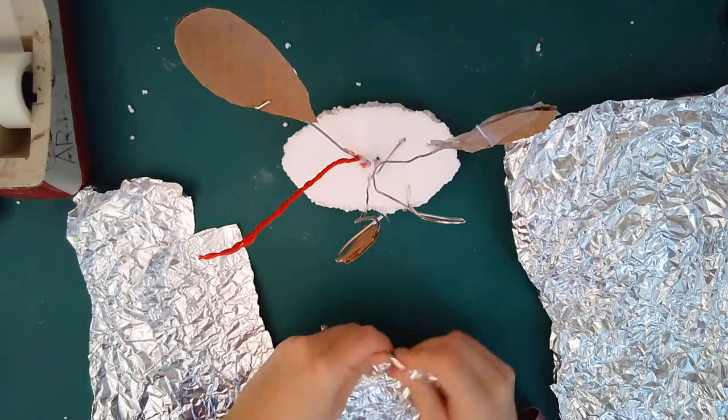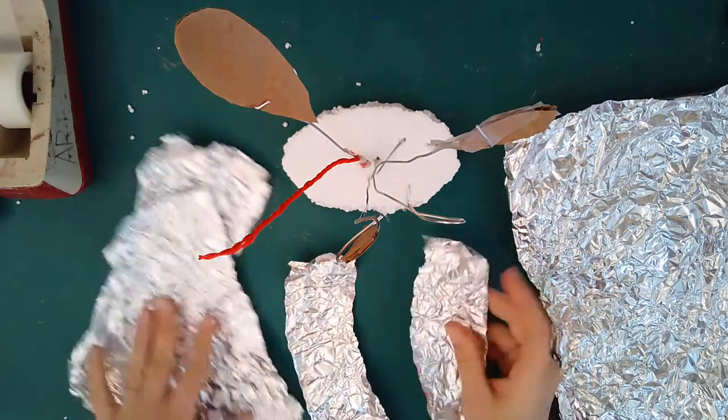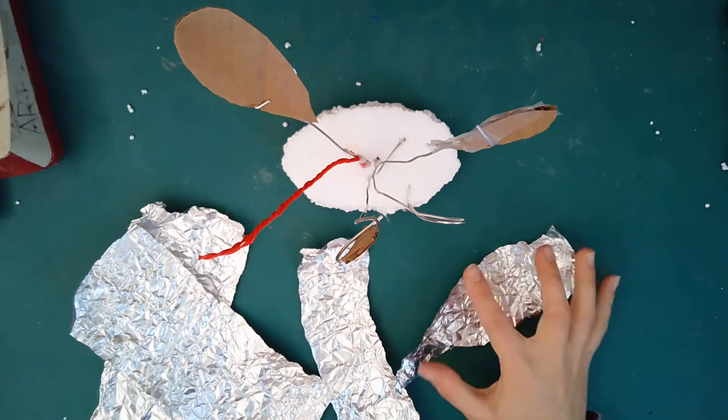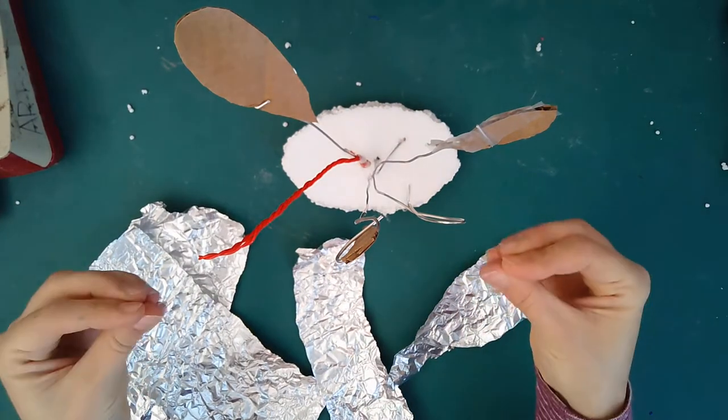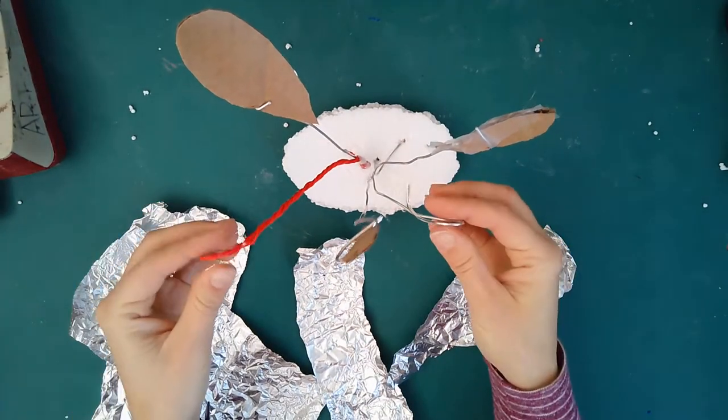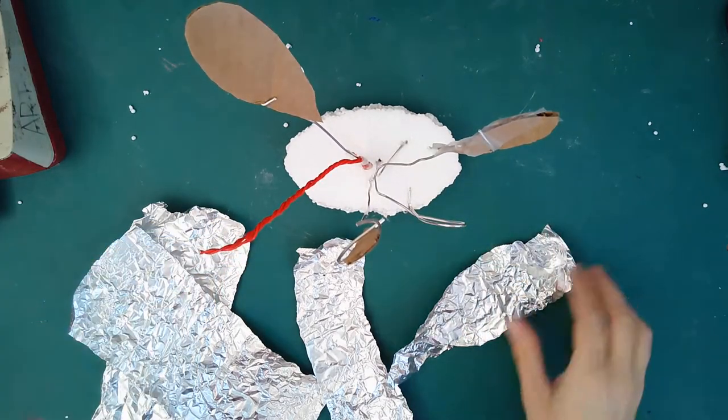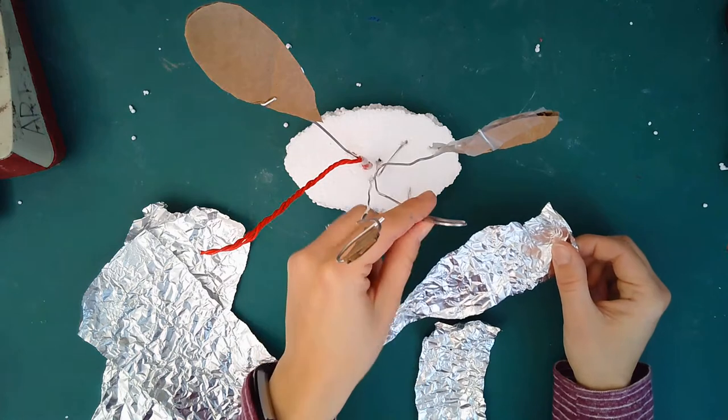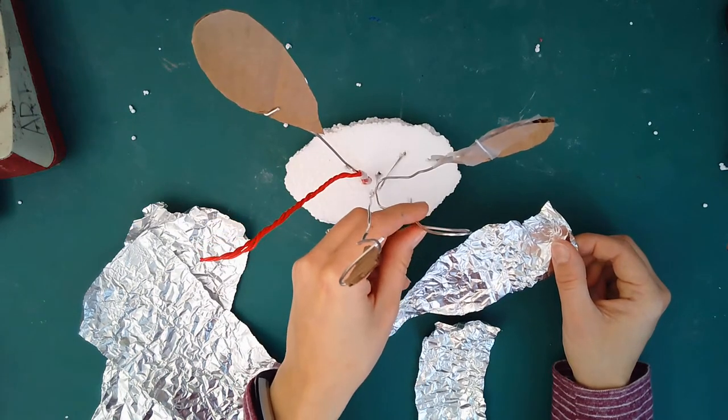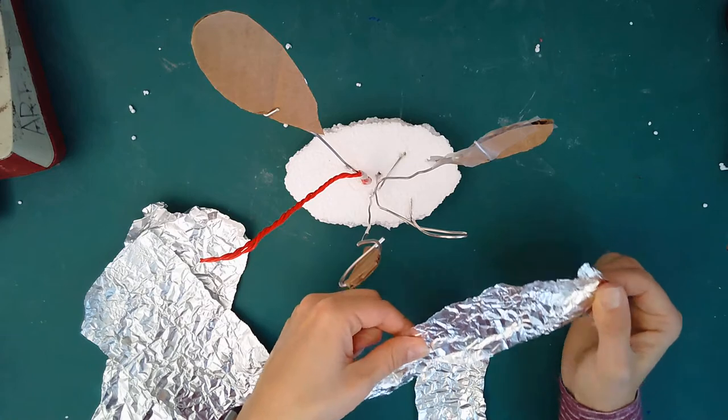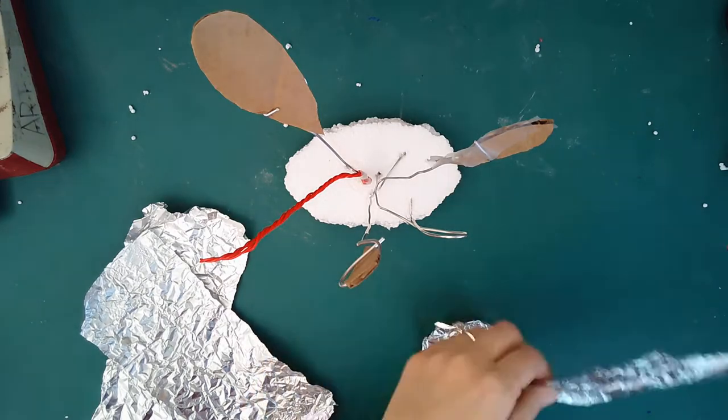Basically this foil is going to be able to add more dimension to the wire here. So thinking of the wire as the skeleton, the wires like the bones or the structure that holds it all up, think of the foil as like the muscles which give your body its tone and definition.